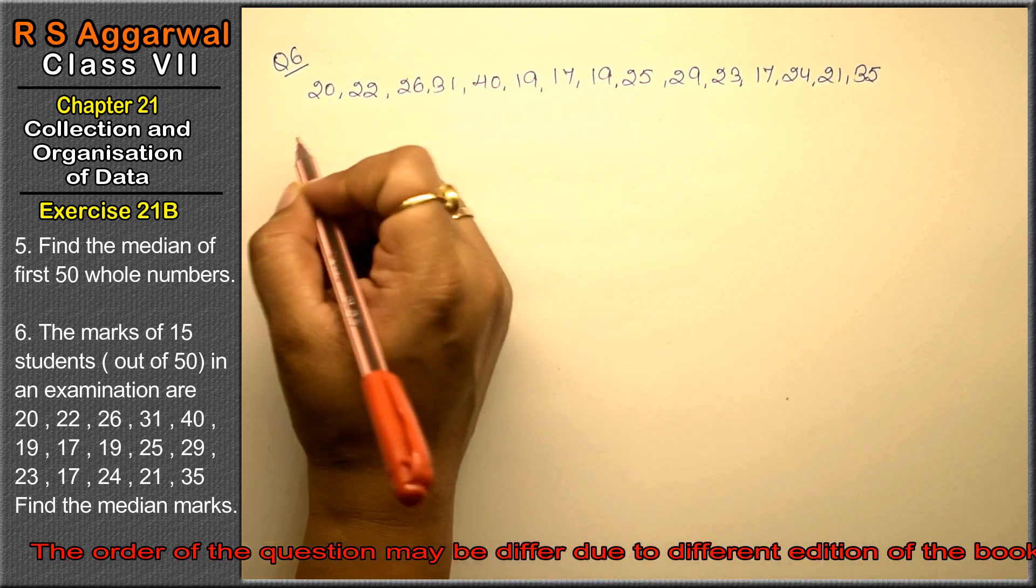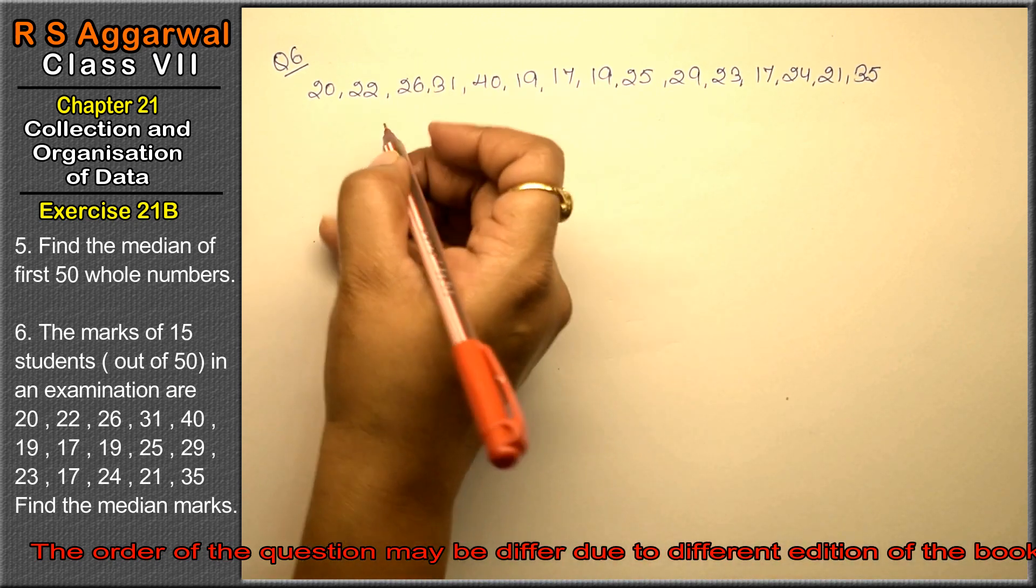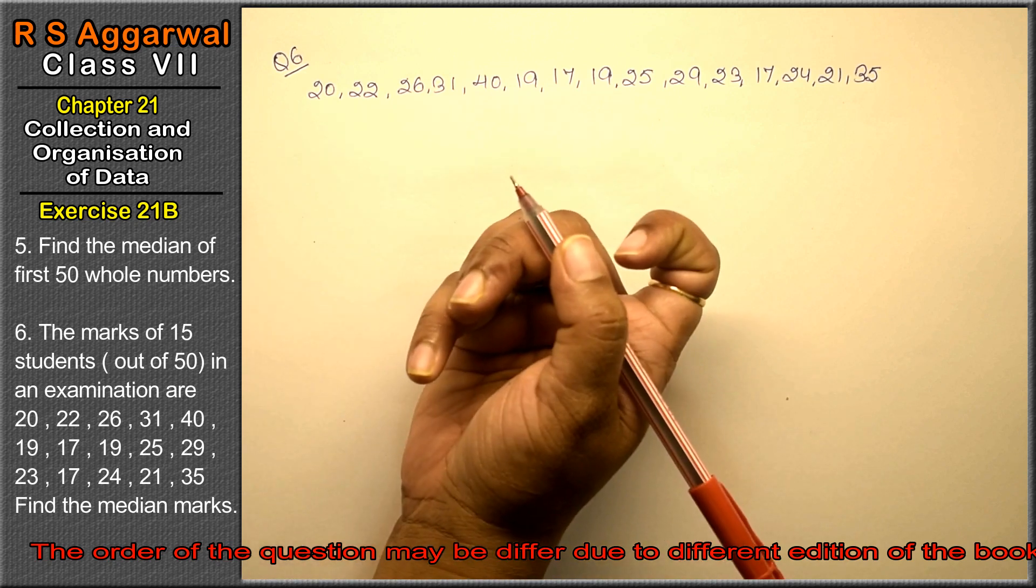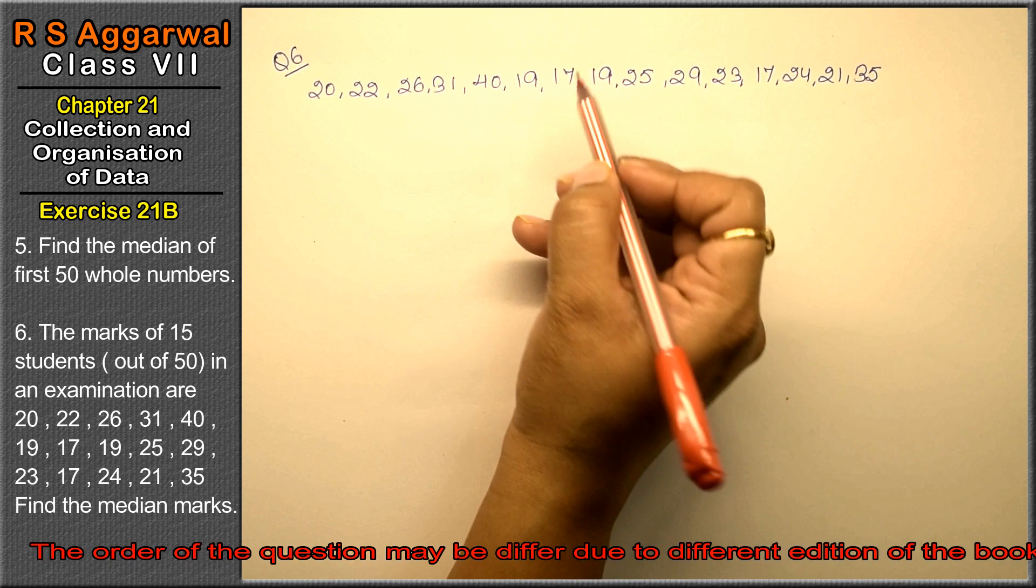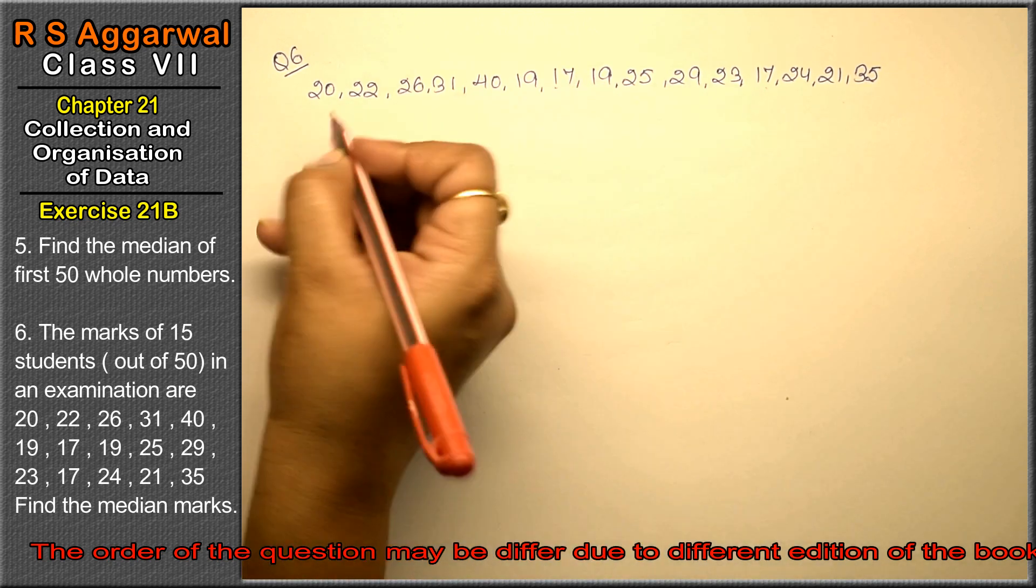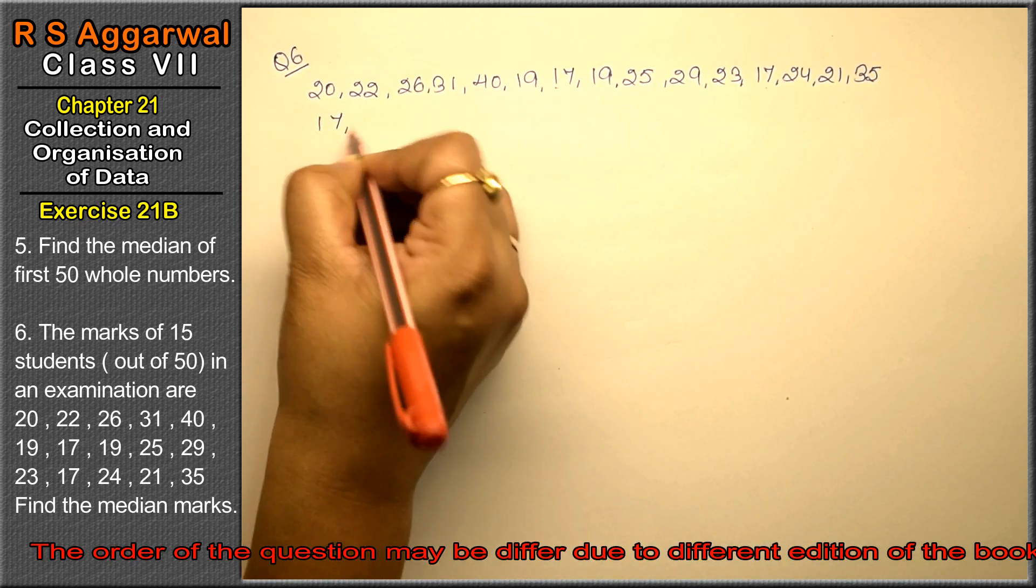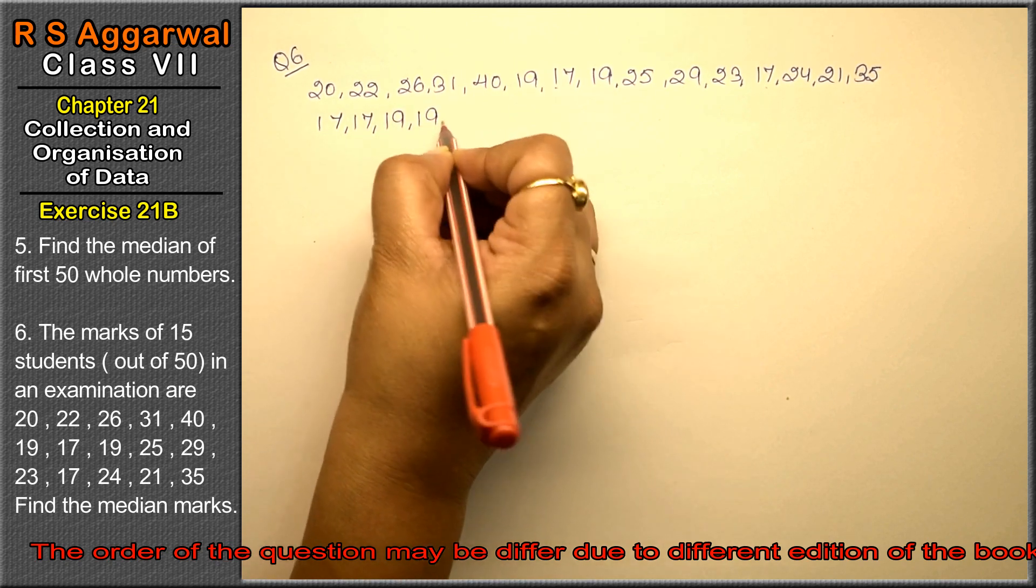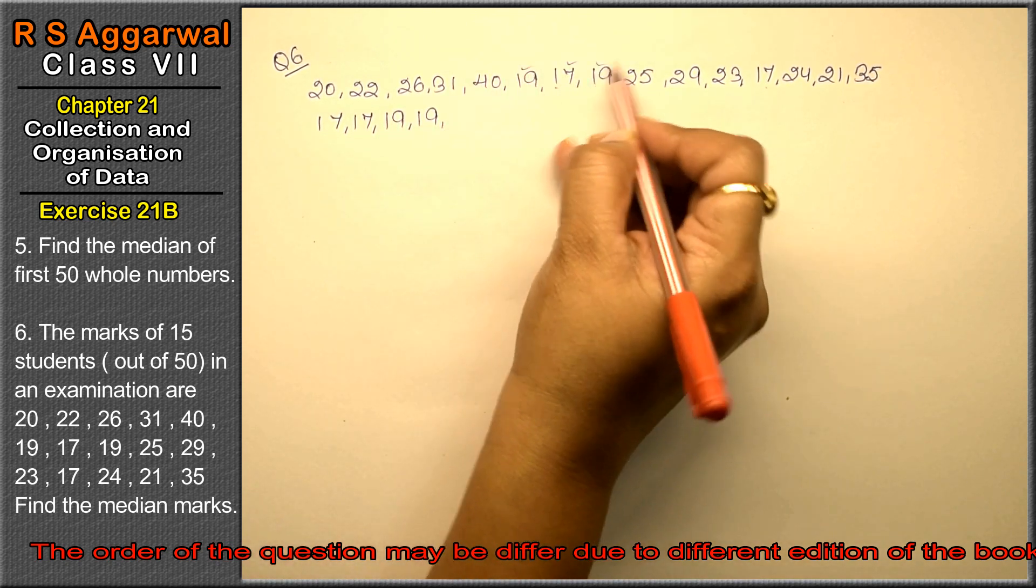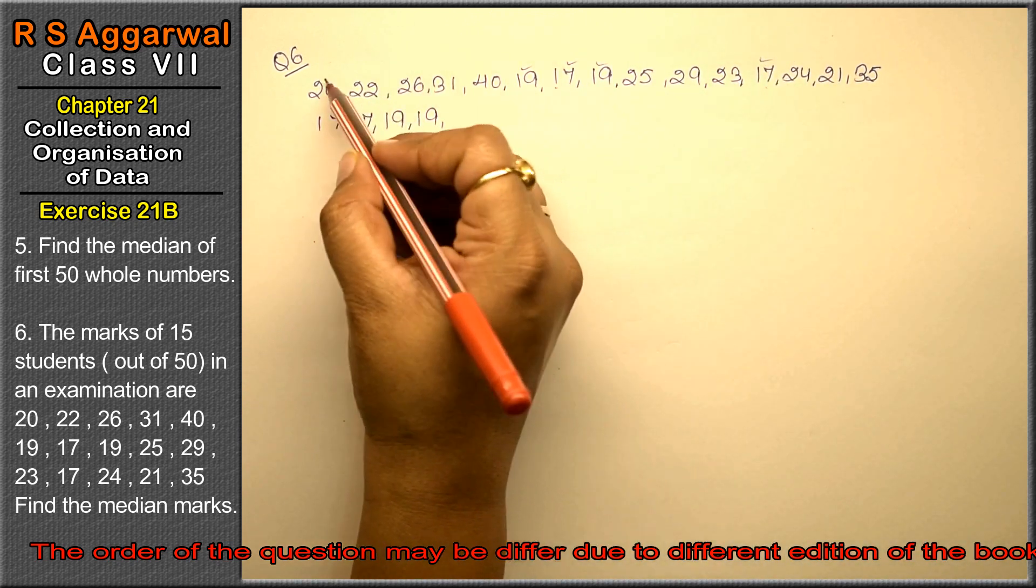This is a discrete series, raw data, so we will change it to ascending order. To arrange in ascending order, the smallest number is 17. So 17 two times, then 19 two times. 17, 19, 17, 19.